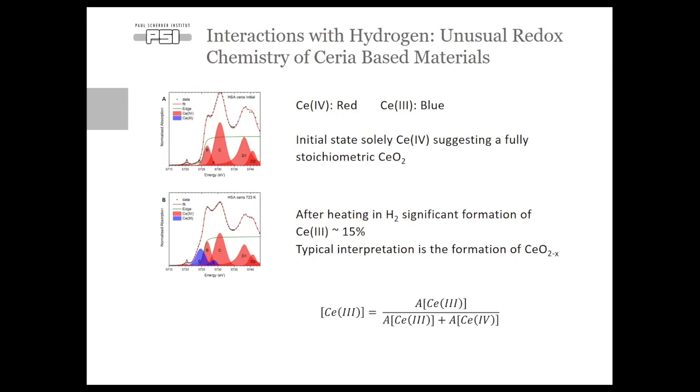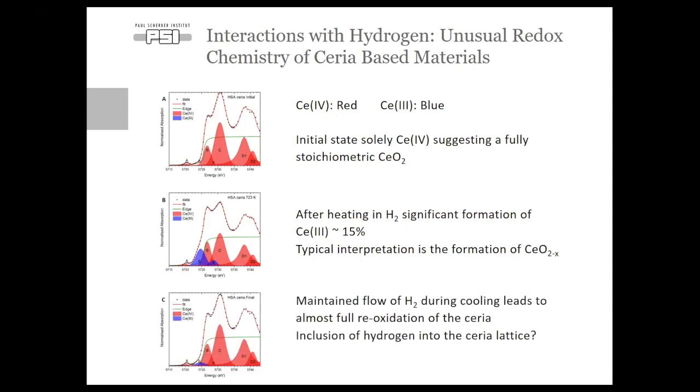Now, it is possible to quantify the amount of cerium-3-plus, and this is widely done to understand a little bit about what is the oxygen storage capacity in these kind of materials. However, after cooling the sample, whilst maintaining a hydrogen flow, unusual redox chemistry does occur. In this case, we see an almost full reoxidation of ceria. So, does this actually mean that we haven't lost oxygen from the structure? Instead, have we localized hydrogen forming a surface oxyhydride or a cerium hydride-like structure? So, whilst XAS provides clues on what's going on on the electronic state, it doesn't really tell you very much on the atomic structure.